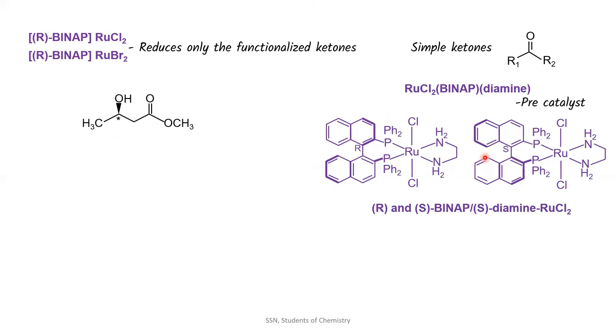This is the R-form of the complex, whereas this is the S-form. This pre-catalyst is treated with H2 and a strong base to give our required active catalyst by eliminating the tertiary butanol and potassium chloride.